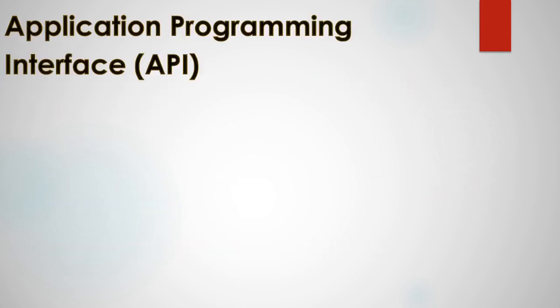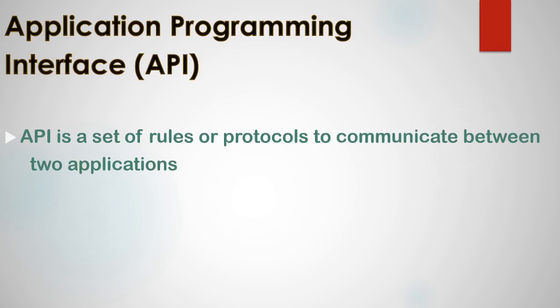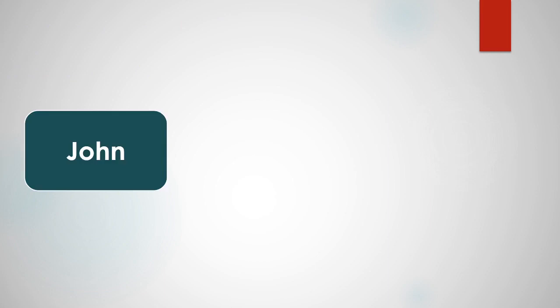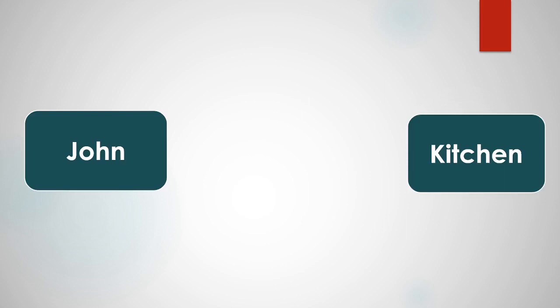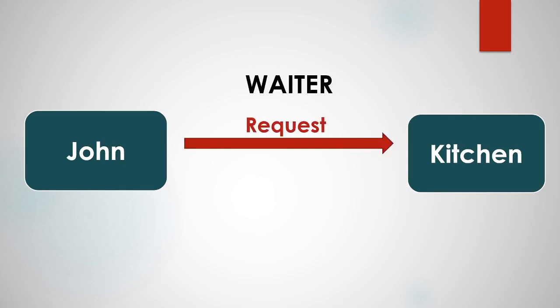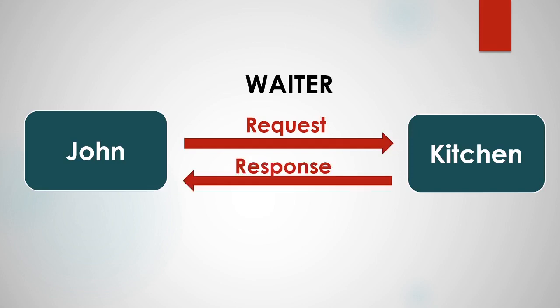Let's get started by looking into the application programming interface. An API is a set of rules or protocols to communicate between two applications. To understand this, consider a person John who is in a restaurant to have some food. The food is prepared in the kitchen, and John doesn't have direct access to the kitchen. A waiter acts as the intermediary, taking John's food request to the kitchen and bringing the response back to John.